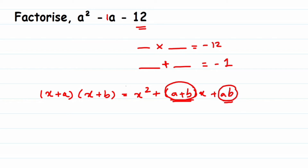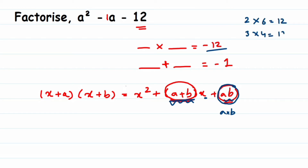Comparing with the identity: the constant term is minus 12, so two numbers multiplied together give minus 12, and when added they should give minus 1. The factor pairs of 12 are: 2 and 6, 3 and 4, and 1 and 12. If I take 2 and 6, then 6 minus 2 is not minus 1, so that doesn't work. If I take 3 and 4, then 3 minus 4 is minus 1 — yes, that works perfectly.